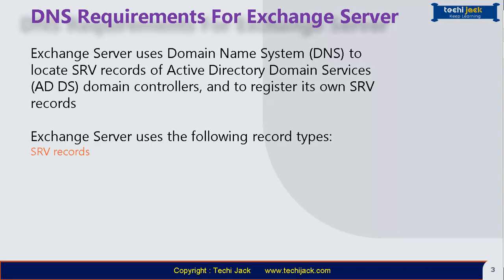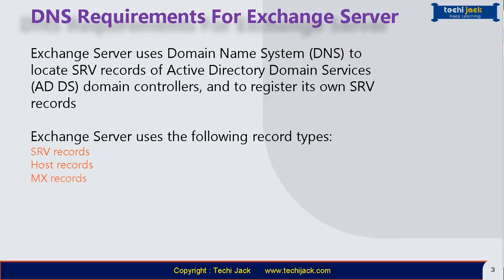Host records provide a mapping of host name to IP address, supporting both IPv4 and IPv6. MX records are very important for accepting email — this record identifies the SMTP server that will accept inbound messages from a specific DNS domain, and each MX record contains a host name and a preference value.